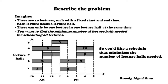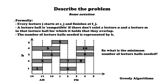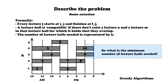Let's come up with some formal notation. Every lecture j starts at s_j and finishes at f_j. A lecture hall is compatible if there don't exist lectures n and m in that hall for which they overlap. The number of lecture halls needed is represented by h, and the question is: what is the minimum number of lecture halls needed?